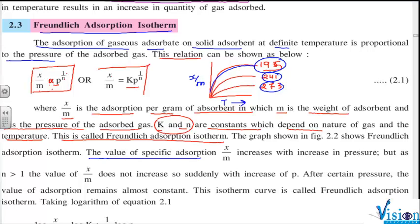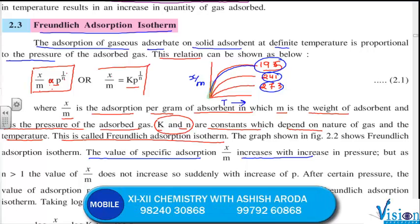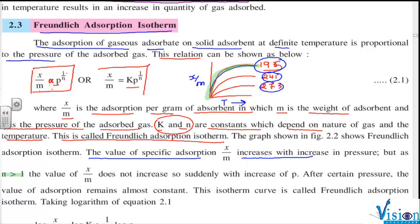The value of specific adsorption x by m increases with the increase in pressure. We can see it over here. If pressure increases, then x by m value increases. And then it becomes constant. But as the value of n is much greater than 1, the value of x by m does not increase suddenly but slowly increases with the increase of pressure. But after certain pressure, this value becomes constant.